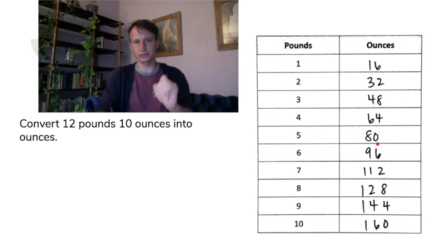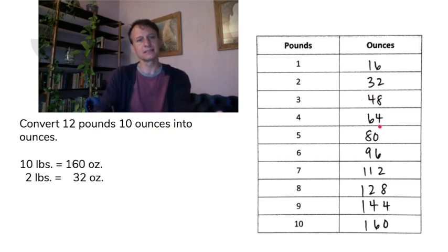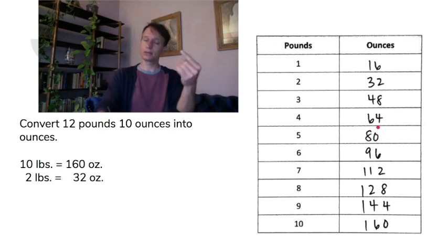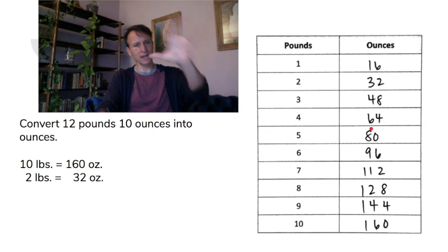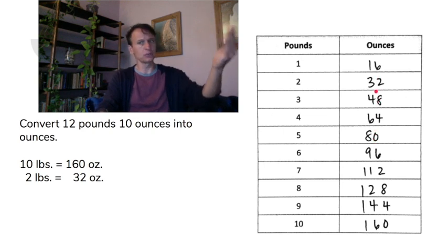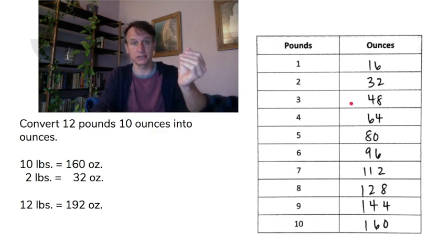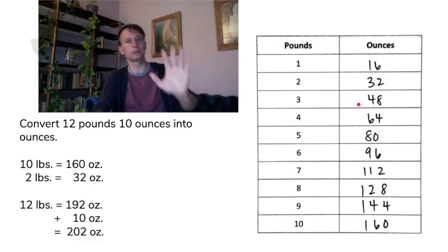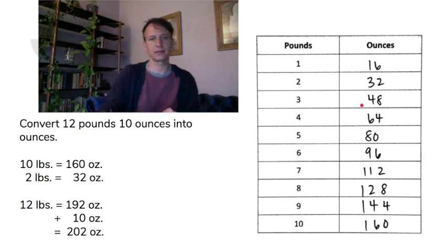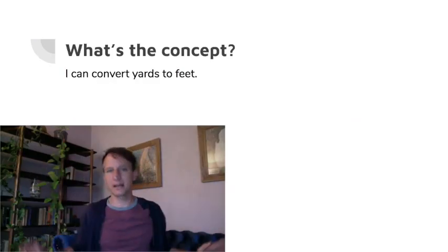Now let's say you have something with pounds and ounces and need it all in ounces: twelve pounds ten ounces. We can decompose the twelve pounds as ten and two. Ten pounds is the easy one — it's just the times-ten slide, so one hundred sixty ounces. The other two is just sixteen doubled: thirty-two. Add one hundred sixty and thirty-two to get one hundred ninety-two, then add the ten ounces: two hundred two ounces.